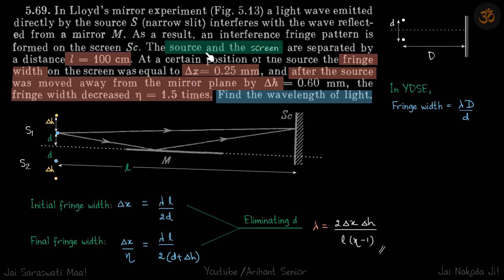We have a modified YDSC where we have a mirror here and a single source of light. We have a screen, and the source and screen are separated by distance L. There is a slight misprint in the book — this should read 'screen' — and the fringe width comes to be delta x, which is given.